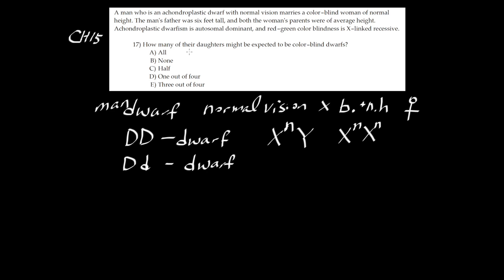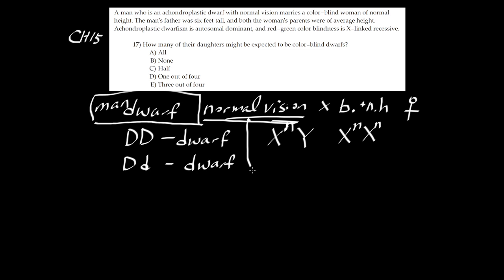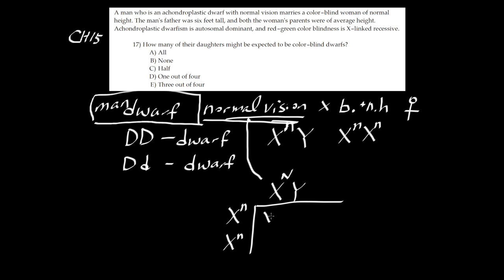Number 17 asks how many of their daughters might be expected to be colorblind dwarfs. Let's think about the man's genotype for vision. Since he has normal vision and blindness is recessive, he must have capital N on his X chromosome: X-capital-N, Y. The colorblind woman must have X-little-n, X-little-n.